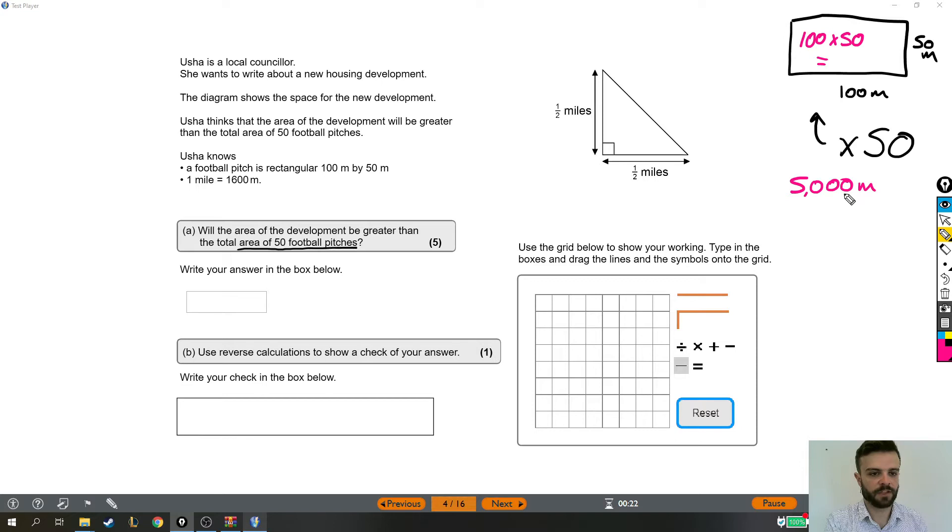So one football pitch is 5,000 meters squared and we need 50 of them, so we now need to times that by 50. And again we can times the first two numbers together to get 25 and then add on four zeros, and that's the area of 50 football pitches.